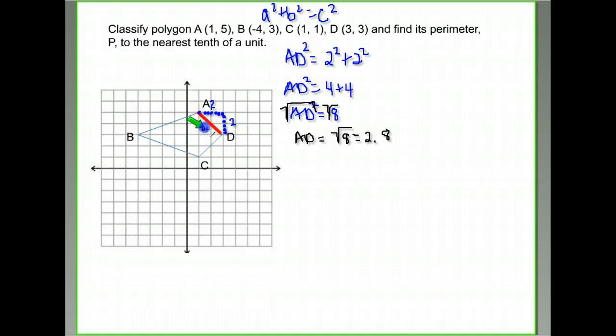So I found this side is 2.8. Now let's find CD. I'm going to do exactly the same thing that I did on my other example. So again, I'm trying to find the length of CD here. I'm going to use my grid to form a right triangle to go down and over from C to D.